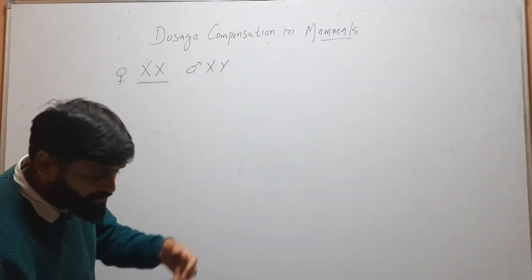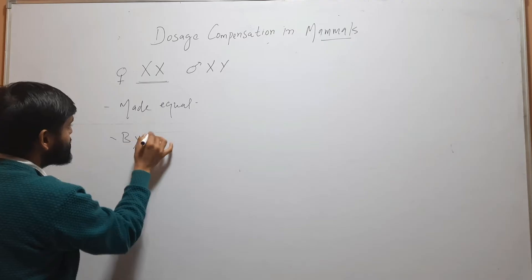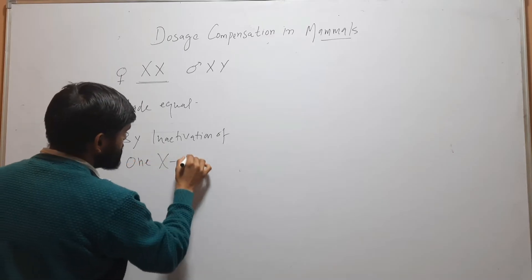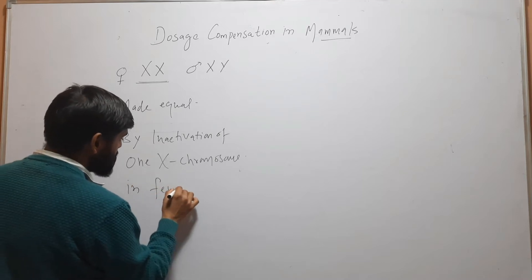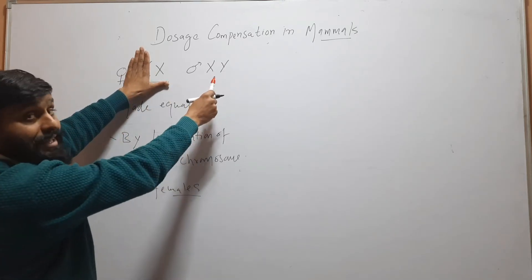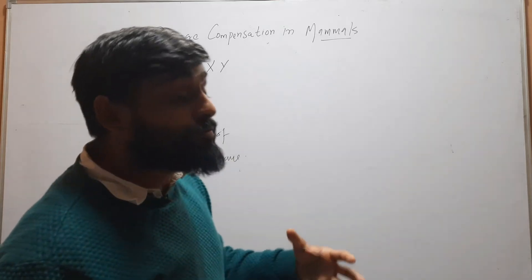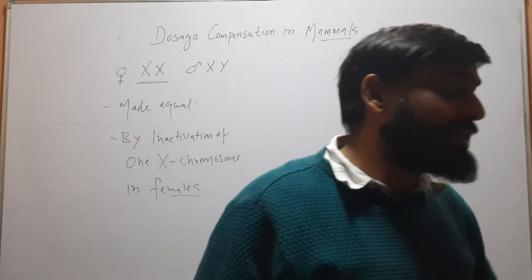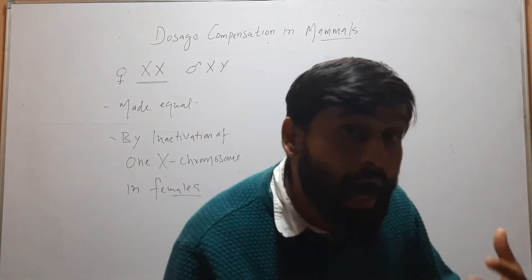In case of mammals including humans, this dose is made equal by inactivation of one X chromosome in females. Females have two X chromosomes, so if one is inactivated then the dose will become equal. Dosage compensation is done by making one X chromosome inactive in females. This inactivation occurs early in embryonic development.